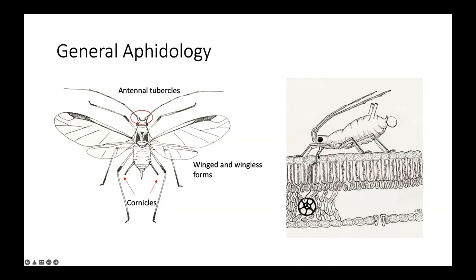Aphids have piercing-sucking mouthparts — they put their mouthparts in and suck sap from the plant, then shunt out honeydew. As Tom mentioned, honeydew is a euphemism for aphid excrement, and it drops onto leaves or fruit where sooty mold can grow. Aphids also tend to hold their antennae back over their body. A hand lens is very important for identifying aphids. They are relatively immobile — they won't move much, as their mouthparts are embedded in the plant — unlike tarnished plant bug nymphs, which move around a lot.